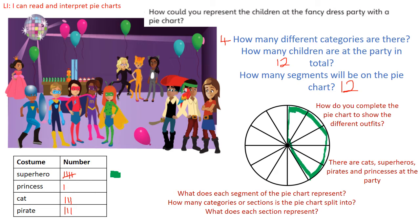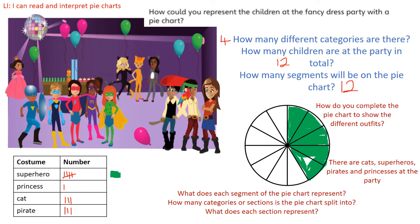Obviously you would be able to do this much neater because you're not trying to do it on the board. So each of these segments represents one child — one superhero. We've got five superheroes in total, so we have to colour in five segments. The segments can represent more than one child, but in this case they've helped us by splitting our pie chart into 12. We've now marked five superheroes on our pie chart.